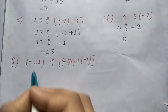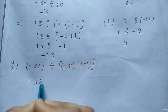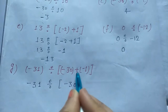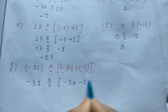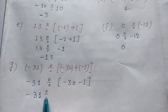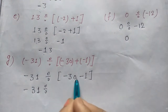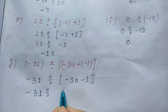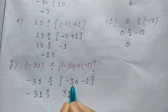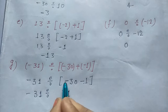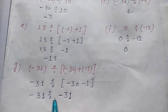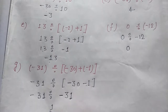Now part G: minus 31 divided by bracket minus 30 plus minus 1. Firstly we solve the bracket: minus 30 minus 1 — minus minus is plus, so plus 30 and plus 1 is 31. And 30 is the greater number, its sign is negative, so the answer will be negative. Minus 31 divided by 31 is 1, and minus minus is plus.